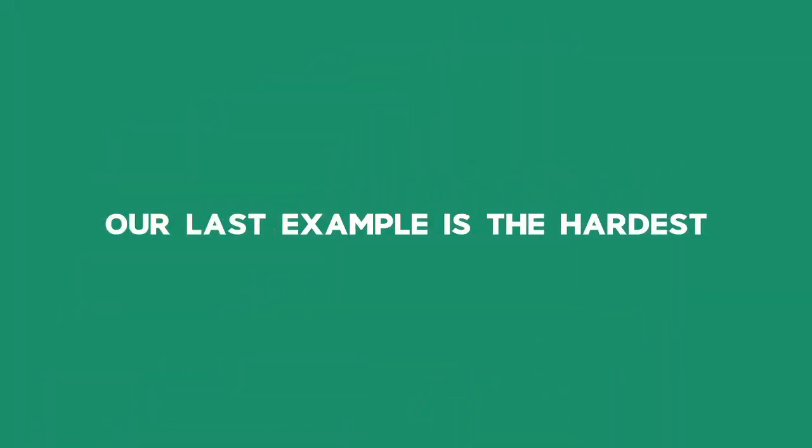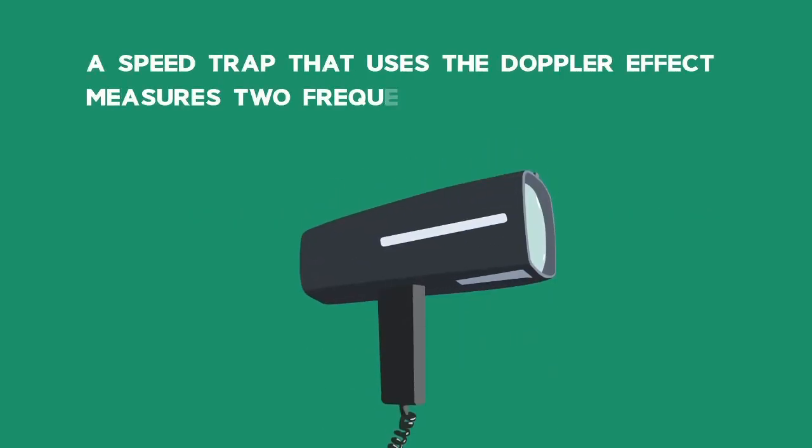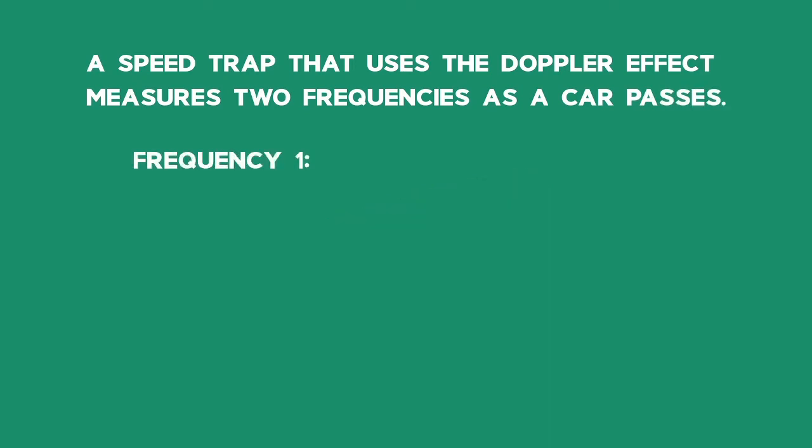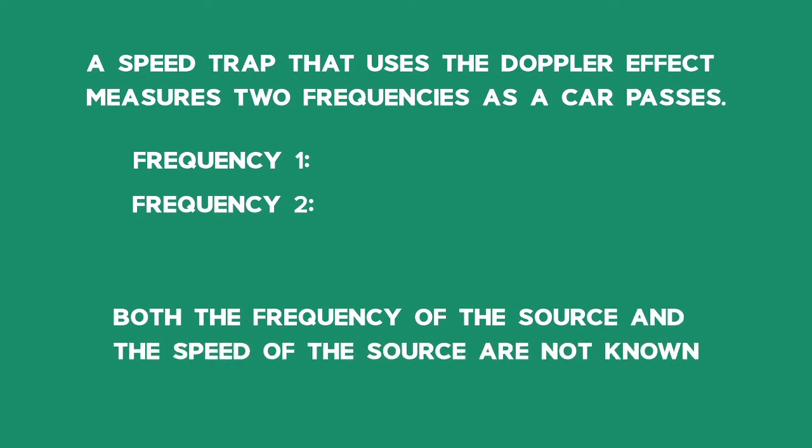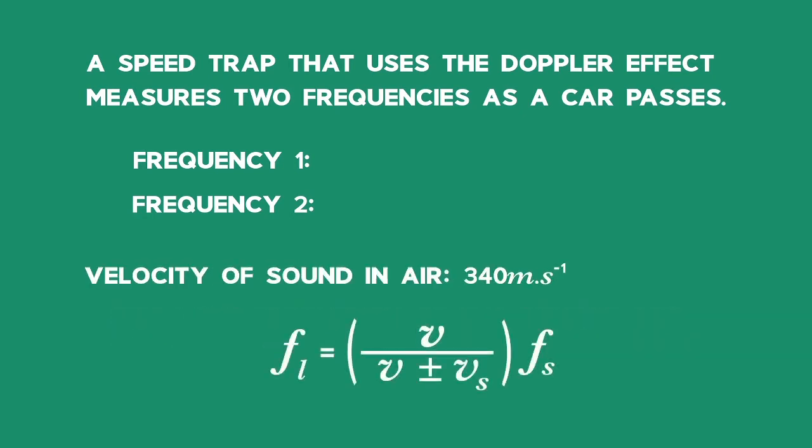Our last example is the hardest. This speed trap uses the Doppler effect to find the speed of a car as it travels. It measures one frequency as the car approaches and another when the car has passed. Both the frequency of the source and the speed of the source are not known. The trap listens to the first frequency as 1079.37 Hz. The second frequency heard is 931.5 Hz.